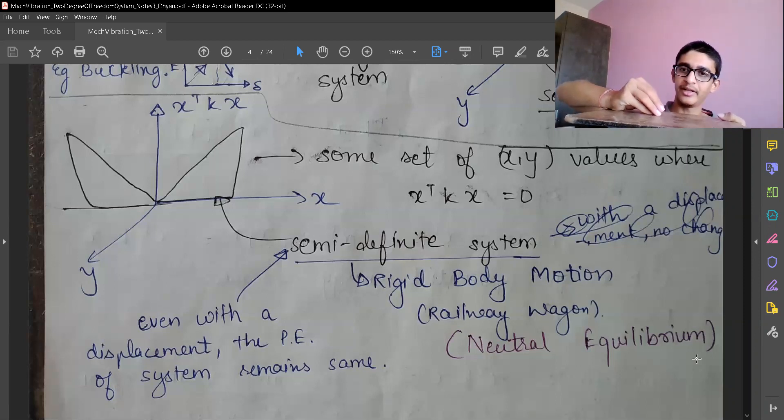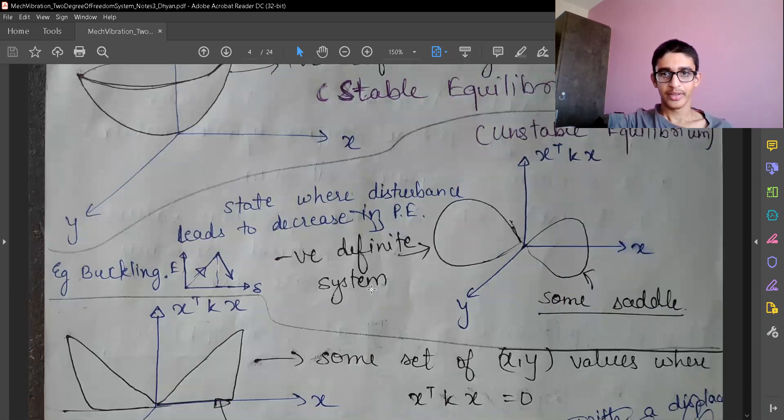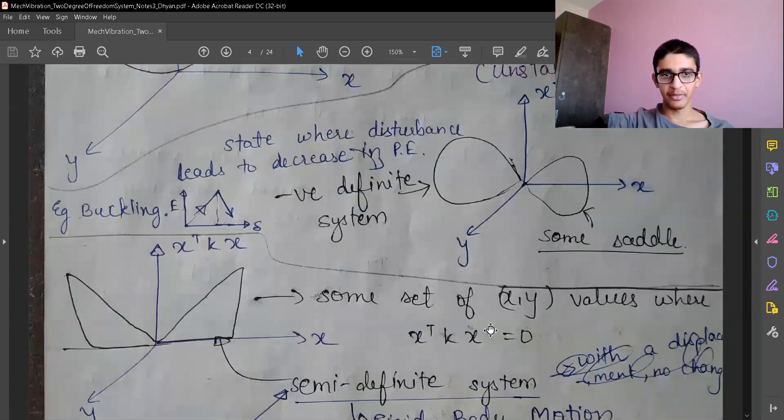If I give some force and it rotates, it will be in some new position, but at that position also it will have stable equilibrium. So it is said as neutral equilibrium.